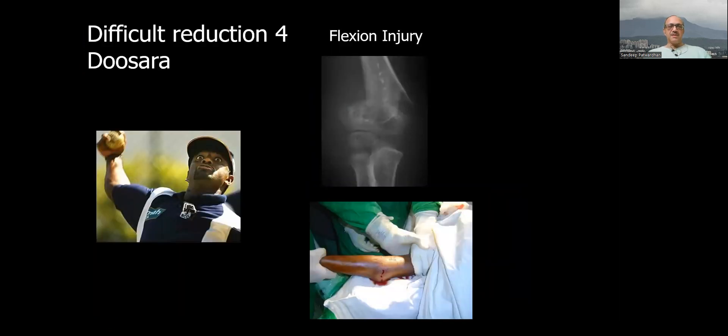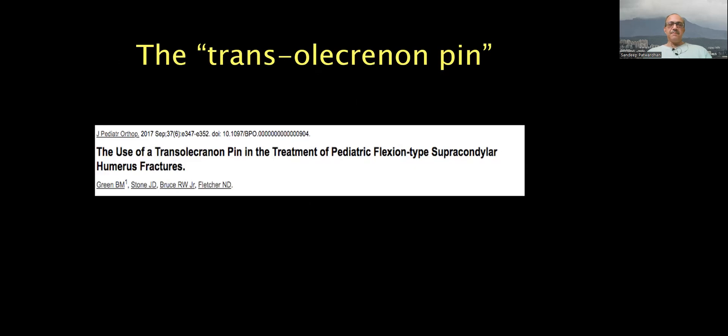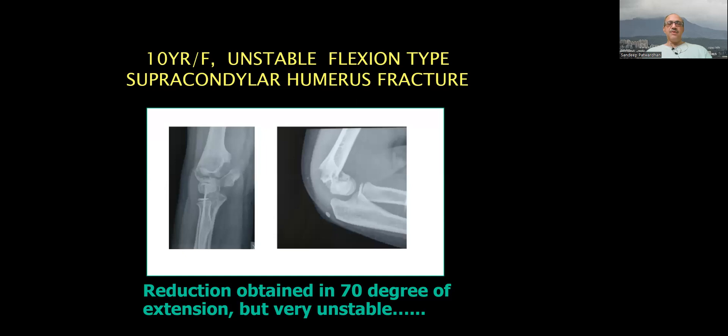Again, flexion type is difficult to reduce because of the nature of the injury. It has to be reduced in extension, but then difficulty is in pinning. So how do you do it? You use the trans olecranon pin, which is if you have a flexion injury, you reduce in extension.